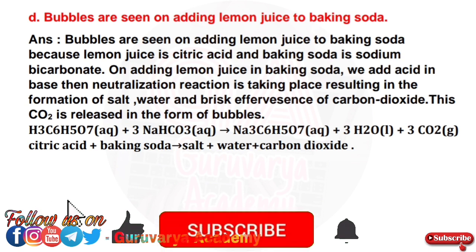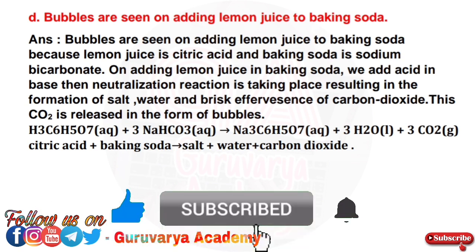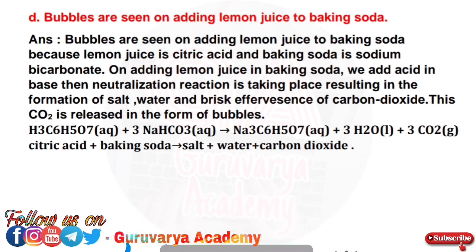Next question D: Bubbles are seen on adding lemon juice to baking soda. The bubbles are seen because lemon juice is citric acid and baking soda is sodium bicarbonate. On adding lemon juice to baking soda, we are adding acid to base. A neutralization reaction takes place, resulting in the formation of salt, water, and brisk effervescence of carbon dioxide. This CO₂ is released in the form of bubbles. That is: C₆H₈O₇ + 3NaHCO₃ → salt + water + CO₂. Citric acid plus baking soda gives rise to salt plus water plus carbon dioxide.